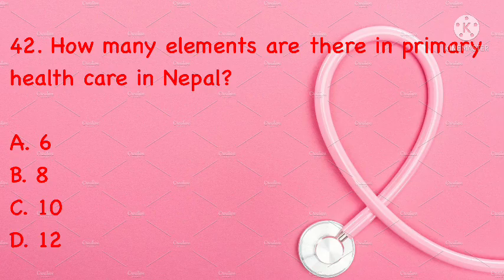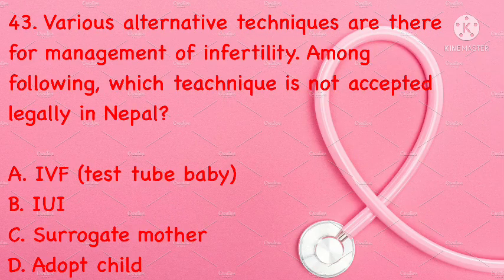How many elements are there in primary healthcare in Nepal? 6, 8, 10, or 12. Correct answer is B: 8.